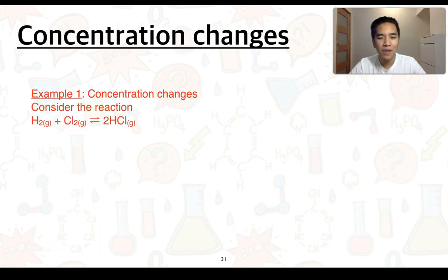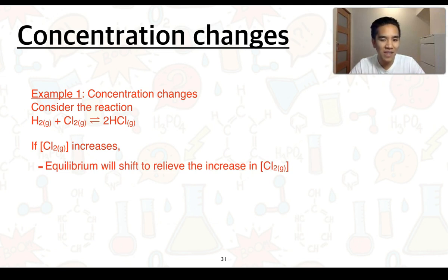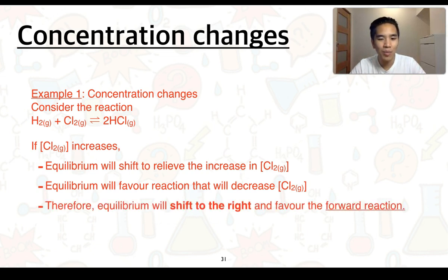Let's firstly look at concentration changes and effects on a system at equilibrium. We're going to consider this reaction here, which is the formation of HCl. If we were to increase the concentration of chlorine gas when the system was at equilibrium, the equilibrium is going to shift to try and relieve this increase in the concentration of Cl2. So it will tend to favour the reaction that will act to decrease its concentration. Looking at the reaction itself, it's going to be the forward reaction that utilises Cl2 as well as H2 to produce HCl. So the equilibrium will favour the forward reaction — another way of saying that is the equilibrium will shift to the right.